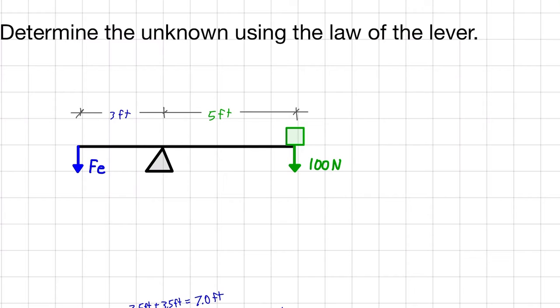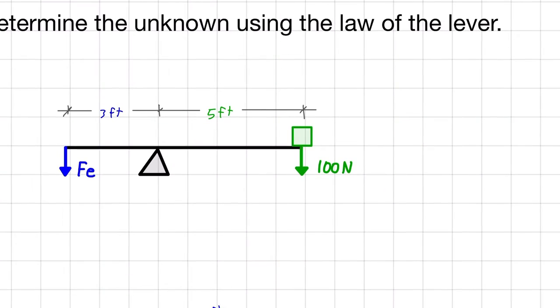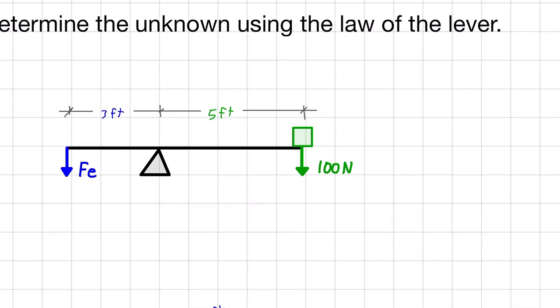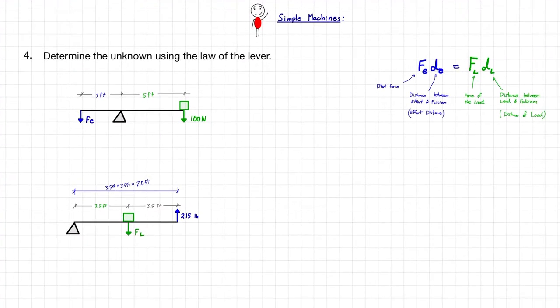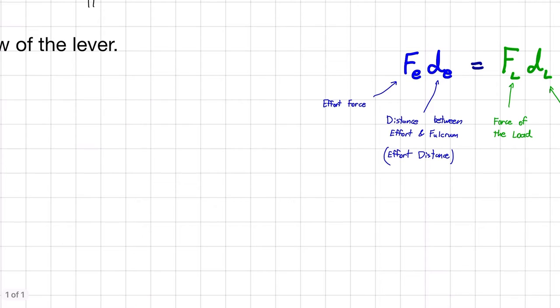So let's look at this first one here. Our unknown is going to be this Fe, the force of the effort. So we are applying this load, and it's an unknown, and we want to solve for it. So let's look at our formula again. And I'm going to write it out here. Fe times De is equal to FL times DL.